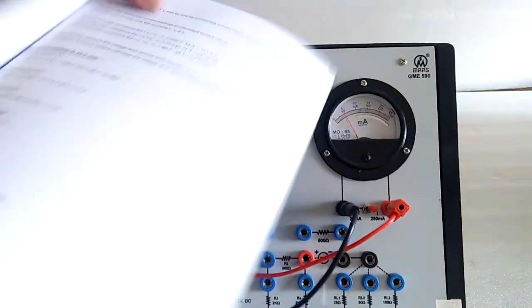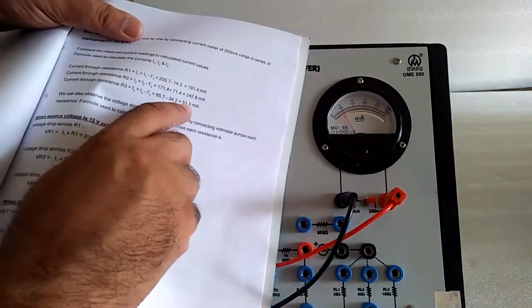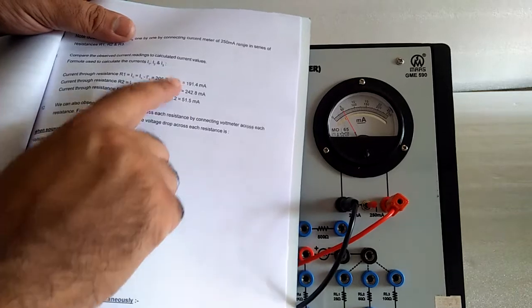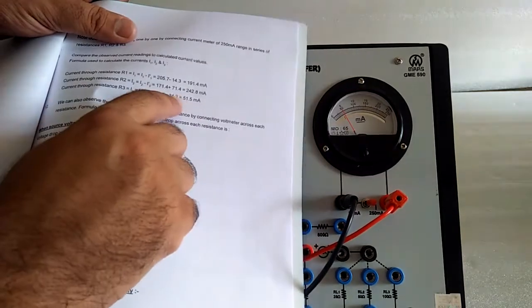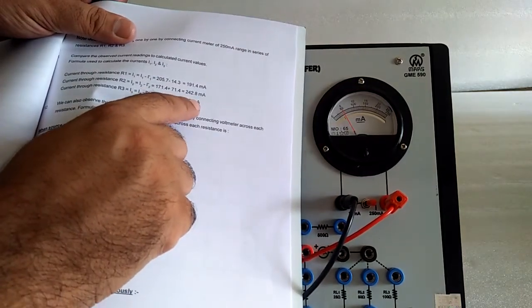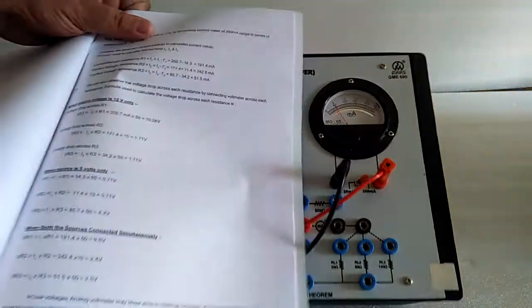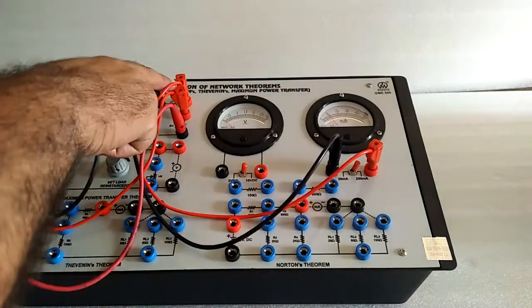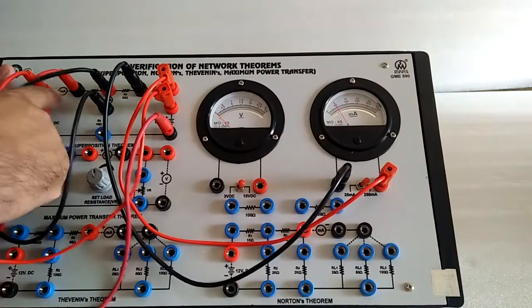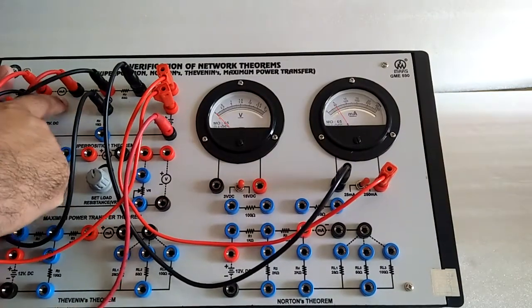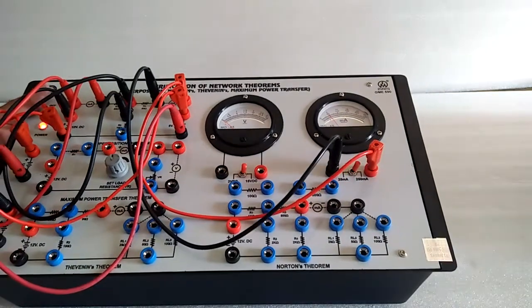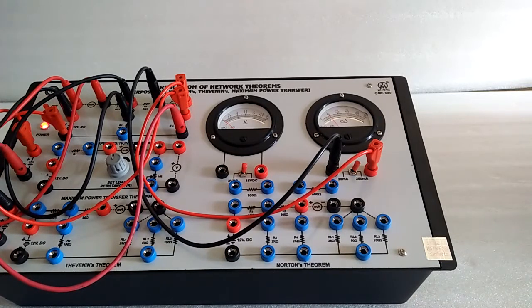Here, we use both supply and verify all the events as we have seen over here, 51.5 for the I3. And the same for both the branches. Hence, superposition theorem is verified.